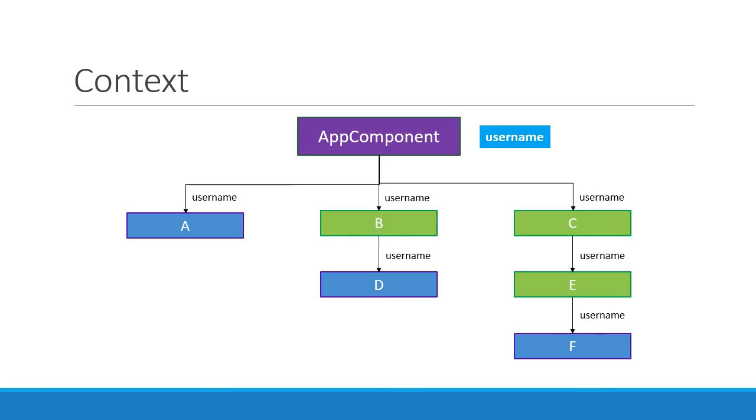Even though components B, C, and E do not need the prop, we still have to send the prop through them to be able to pass it to components further down in the tree.